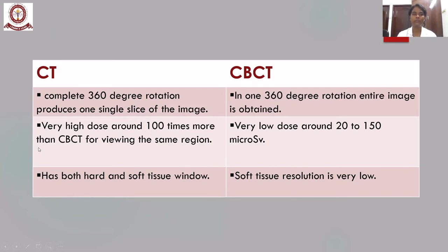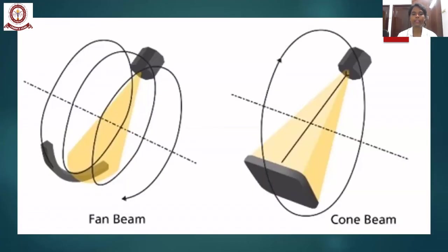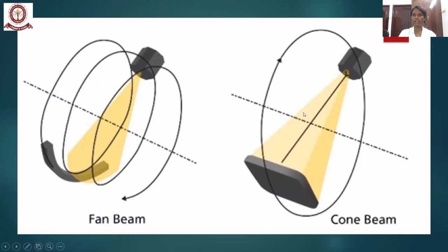CT delivers a very high radiation dose — around 100 times more than CBCT for viewing the same region — whereas CBCT delivers a very low dose of around 20 to 150 microsieverts. CT has both hard and soft tissue windows, whereas soft tissue resolution is very low for CBCT. The fan-shaped beam of CT uses a linear detector requiring multiple spiral rotations around the patient, whereas the CBCT cone beam with flat panel detector needs only one single rotation to cover the entire volume.